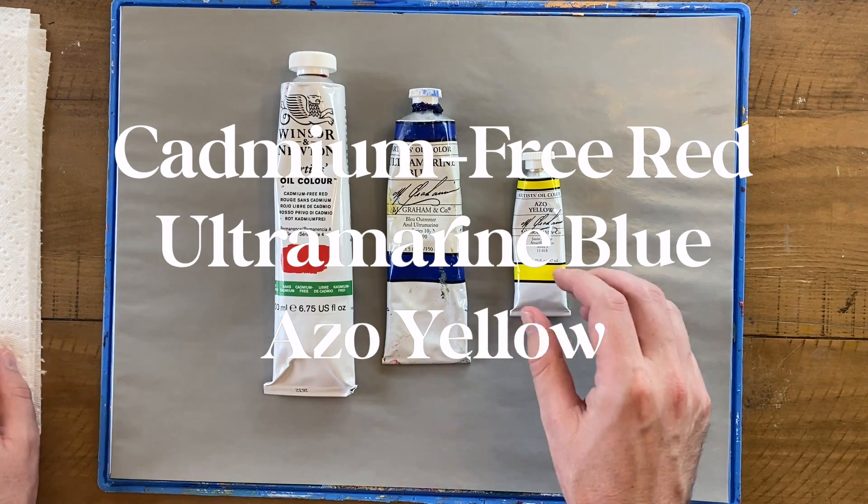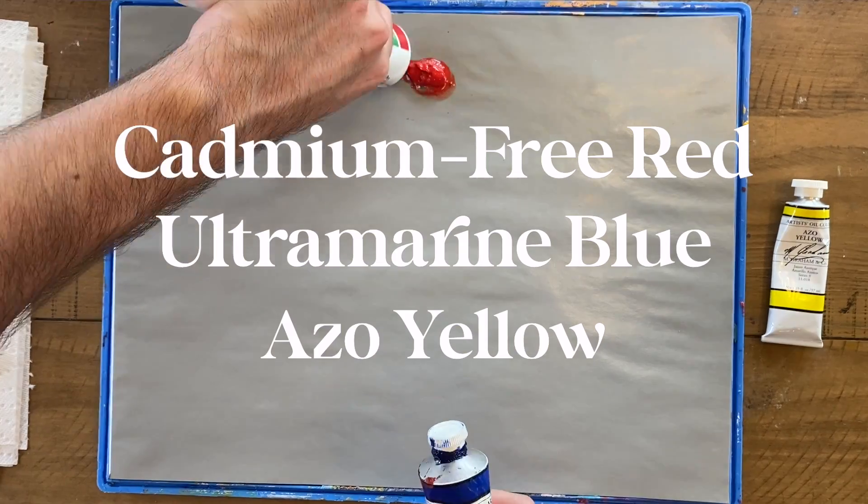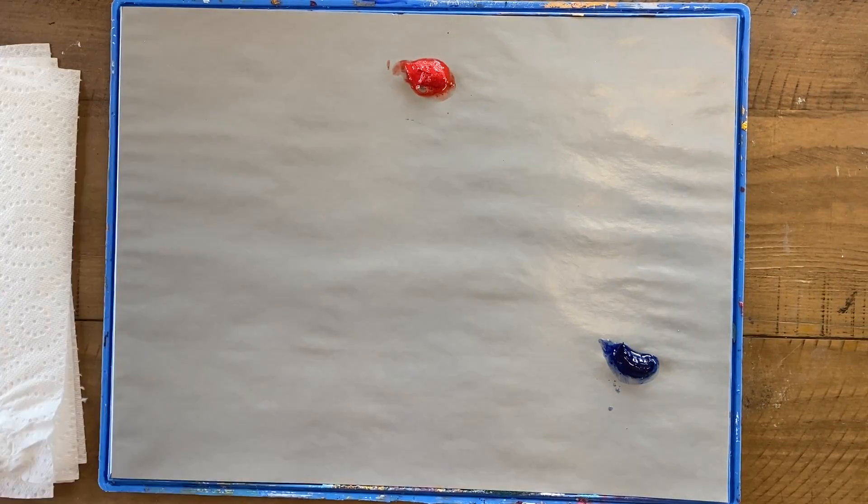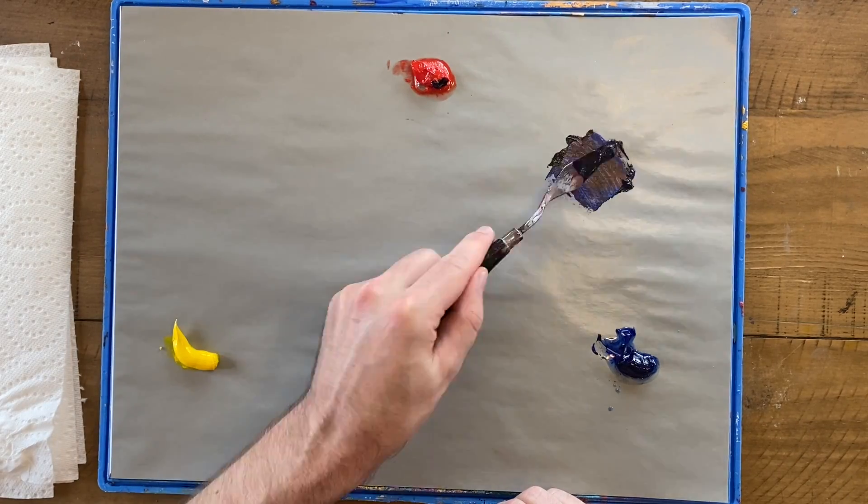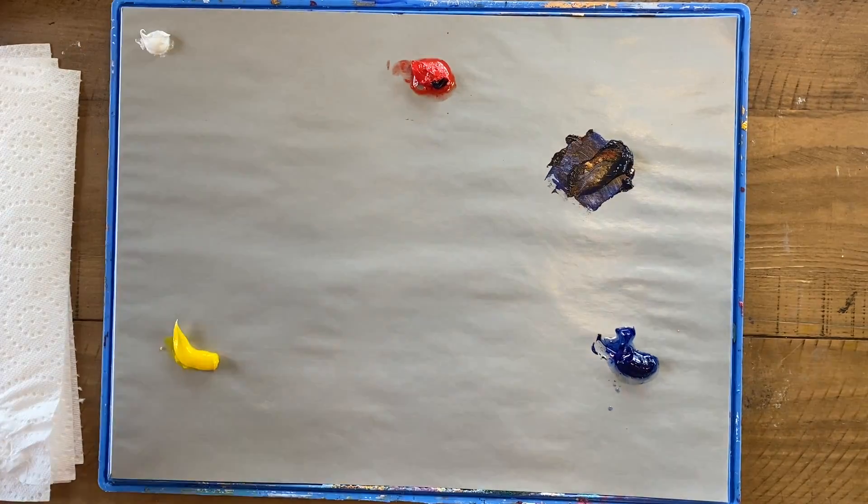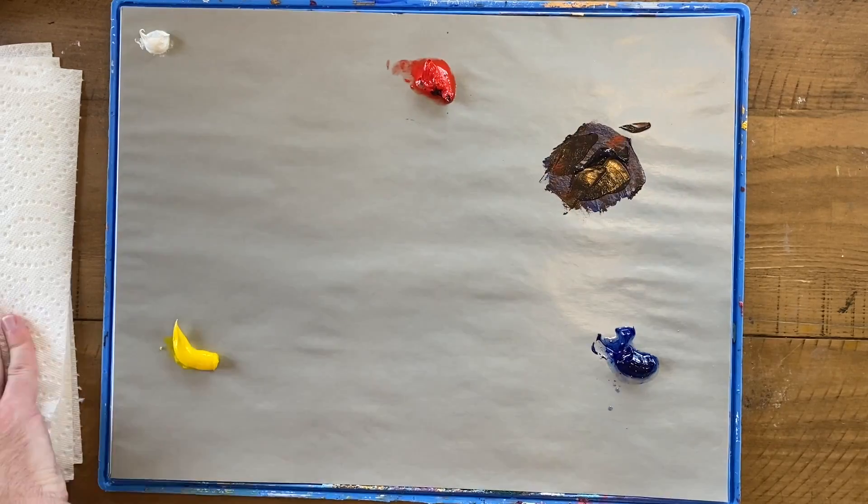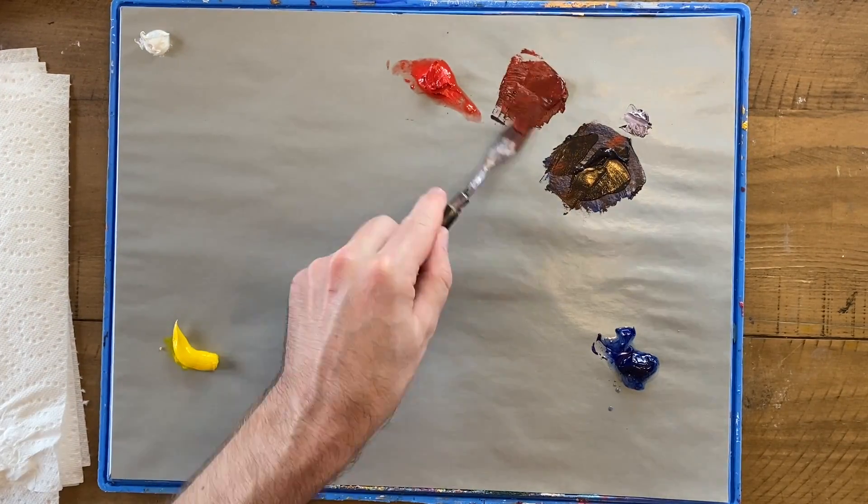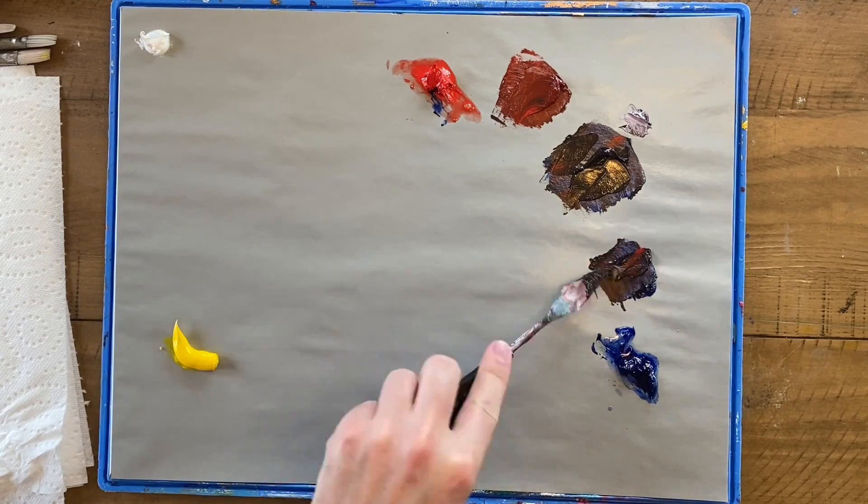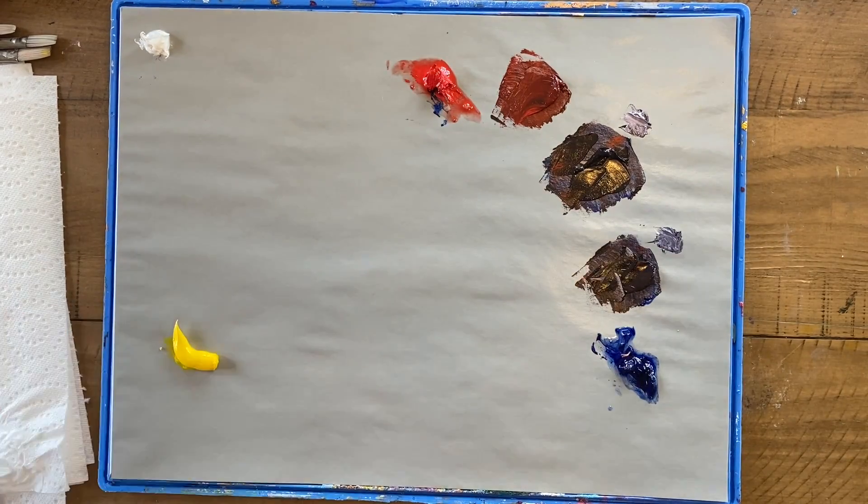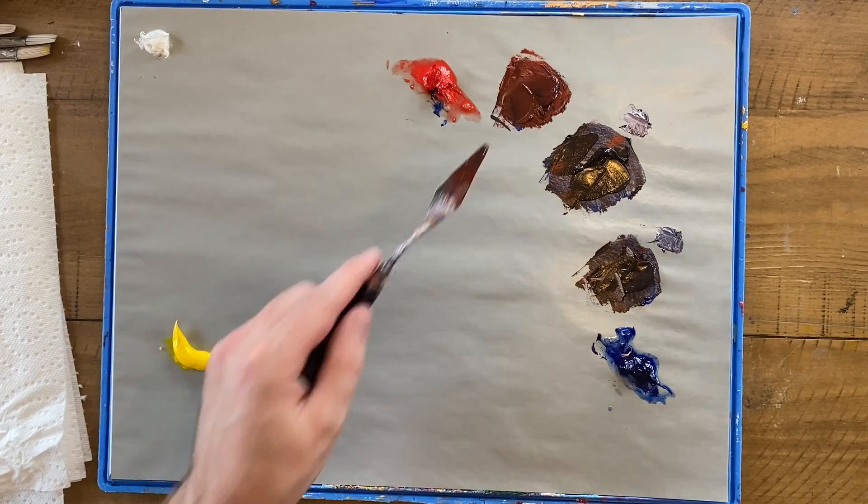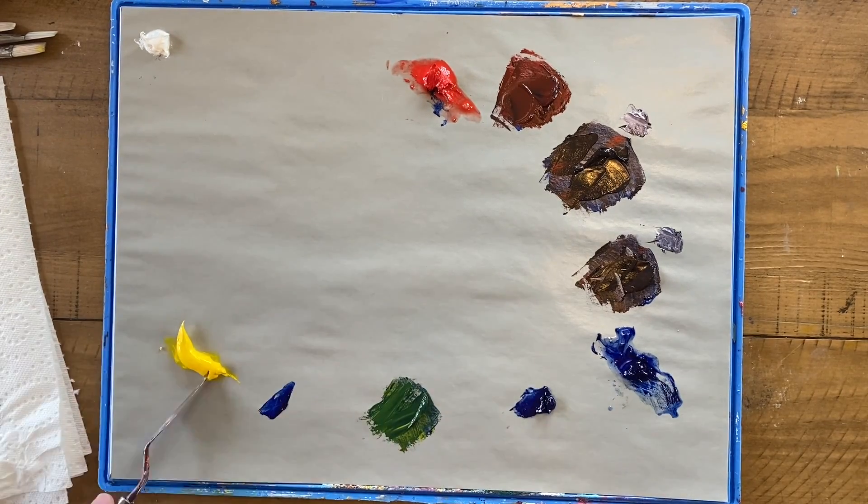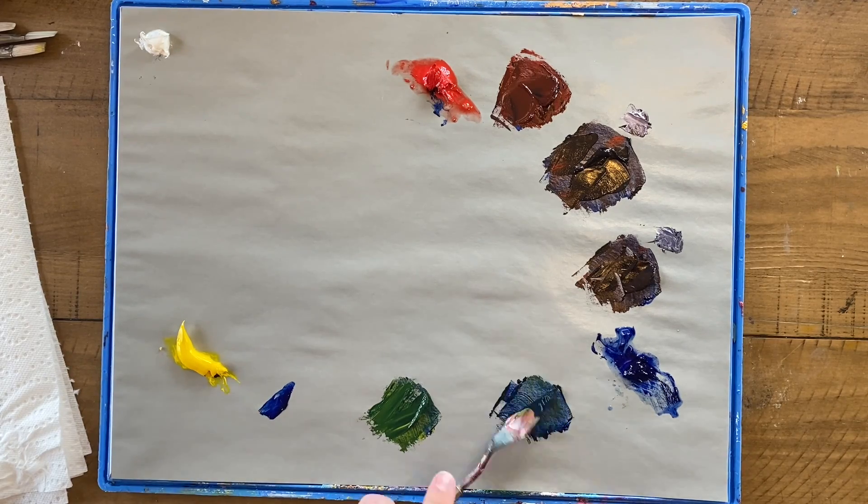We're going to start off with the traditional three primary colors: red, blue, and yellow. Now the results that you'll get out of color mixing are highly dependent on which red, blue, and yellow you choose. So I kind of just have to make a judgment decision on which colors I want. But these are the ones that I like to use in my painting. If you happen to use, say, a cadmium yellow instead of this, your color wheel is going to look a little bit different than mine.